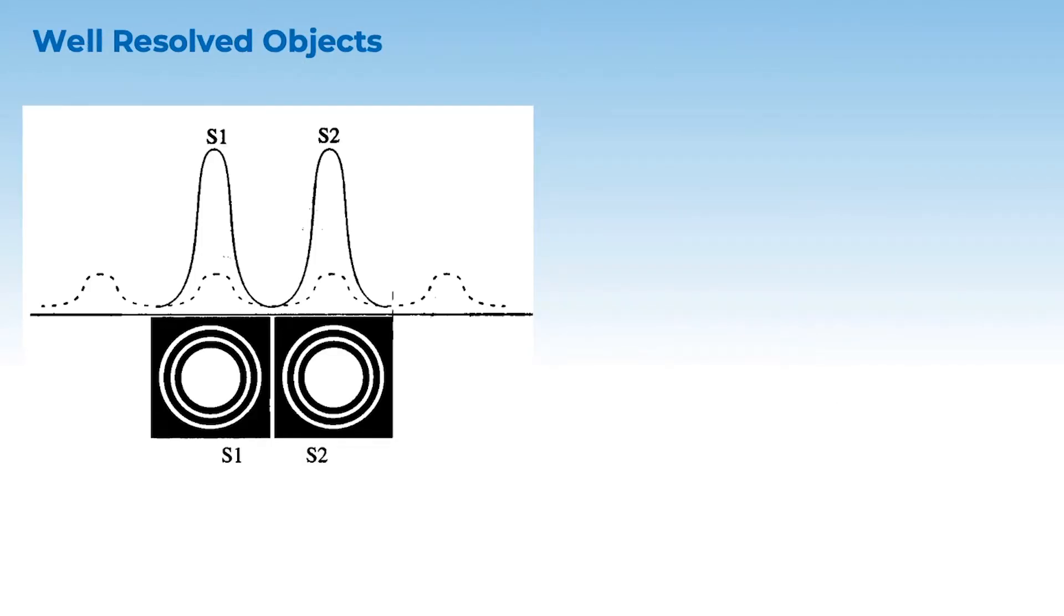Now we will read some definitions, from which we can easily define resolving power. So the first definition is well resolved object. Two objects S1 and S2 are well resolved when their peaks are separate and distinct, and their minima are also separate and distinct. As clearly you can see here, the maxima or the peak of both S1 and S2 are clearly visible separately, and minima is quite sharp.